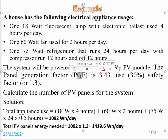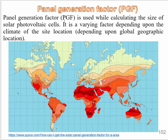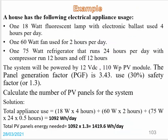In some examples we have a factor called the panel generation factor (PGF). The PGF is used when calculating the size of solar photovoltaic cells. It is a varying factor that depends on the climate of the site location, so each location has its own panel generation factor, which differs from one region to another.